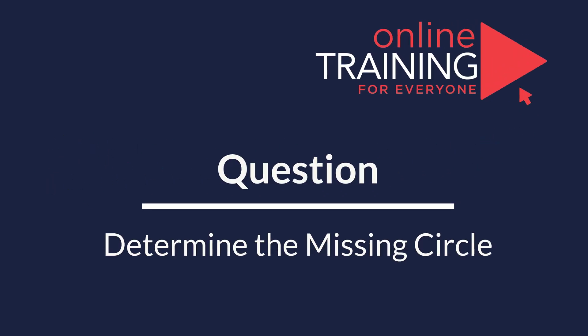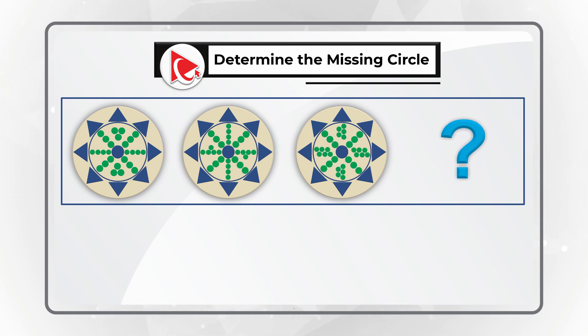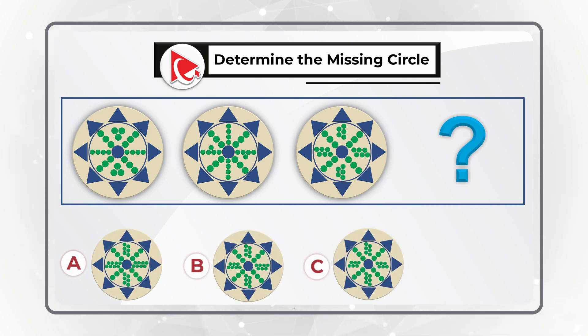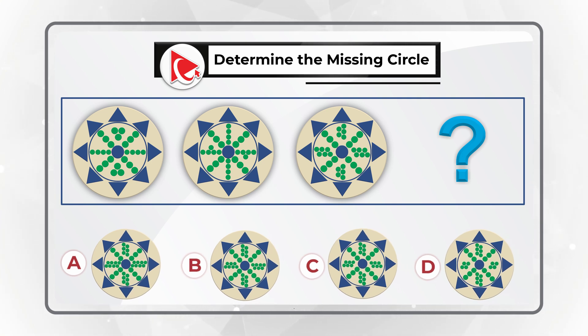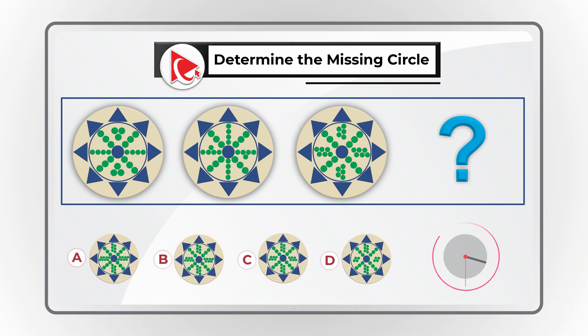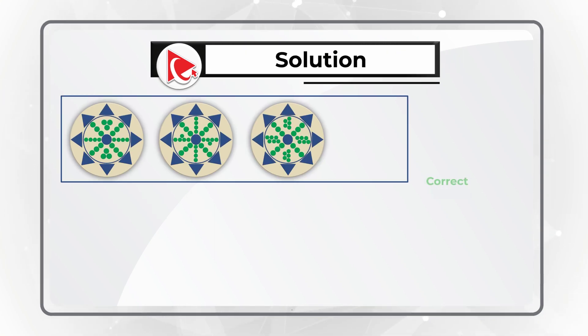Here is a very interesting question which seems hard, but in reality is extremely easy to solve. You are presented with three circles and the fourth circle is missing. You need to determine the fourth circle out of four different choices — A, B, C, and D. You should not just randomly select one, but determine which item is missing based on a particular pattern. Give yourself a little bit of time. I think the correct choice here is choice B.